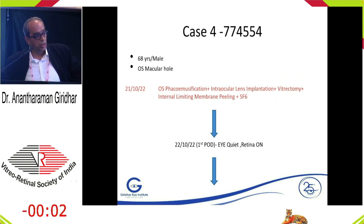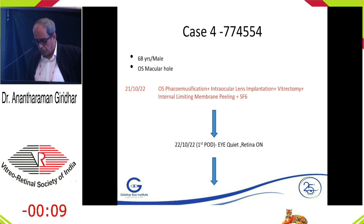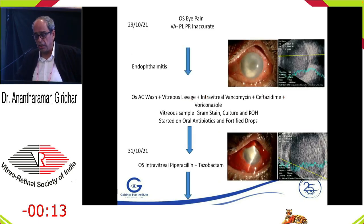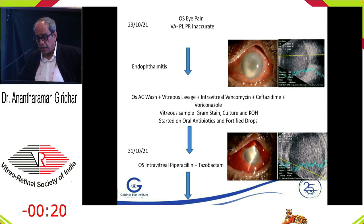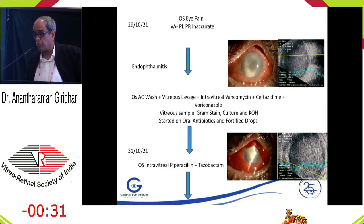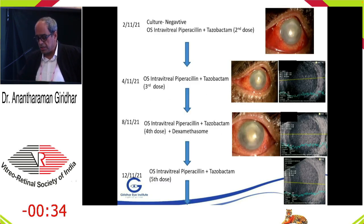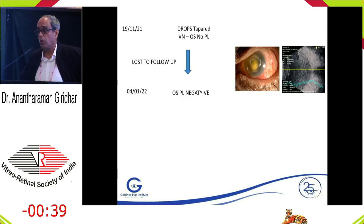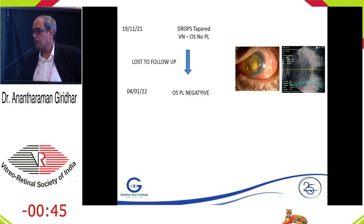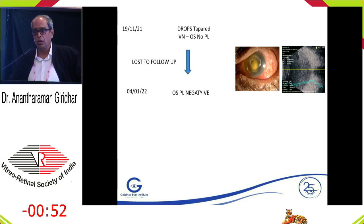Case four: post-vitrectomy endophthalmitis following macular hole surgery by a senior vitreoretinal surgeon. The patient returned with significant eye pain — post-vitrectomy endophthalmitis cases are usually fulminant. The patient underwent immediate vitreous lavage with intravitreal antibiotics plus voriconazole, and subsequently piperacillin-tazobactam combination was given with multiple doses. Unfortunately the outcome was bad; the patient was lost to recent follow-up and ended with a phthisis. This represents a very fulminant endophthalmitis with severe sequelae. These four cases illustrate some of the key complications of endophthalmitis.